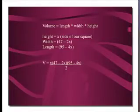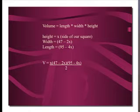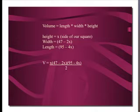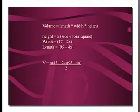The volume of our box is found by length times width times height. The height is x — that's the size of our square. The width is 47 minus 2x and the length is 95 minus 4x. Our volume formula is x times 47 minus 4x, divided by 2 because of the fold over.